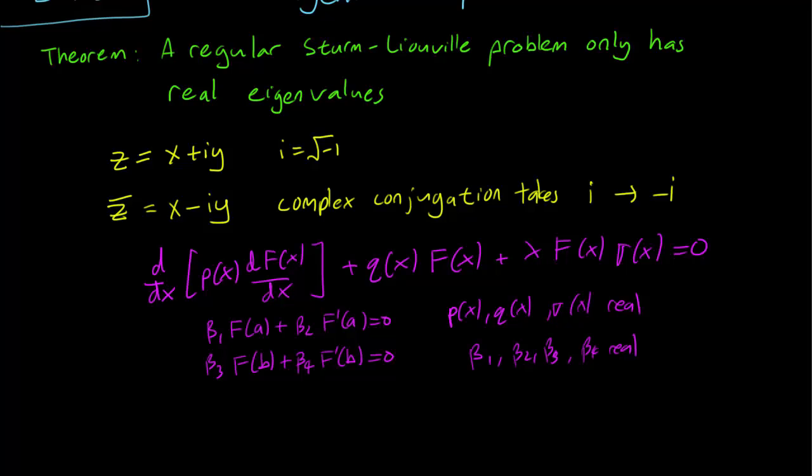So why is that helpful? Consider this. Let's say we want to conjugate both sides of the equation, replace all the i's in the equation with minus i. Clearly, if the equation holds before, it should still hold if we replace all the i's with minus i. But the only terms that have i's in them that might be complex are lambda and f. The eigenvalue and the eigenfunction are the only terms that might be complex. So if we conjugate, we replace all the i's with minus i here, here, here, and here.